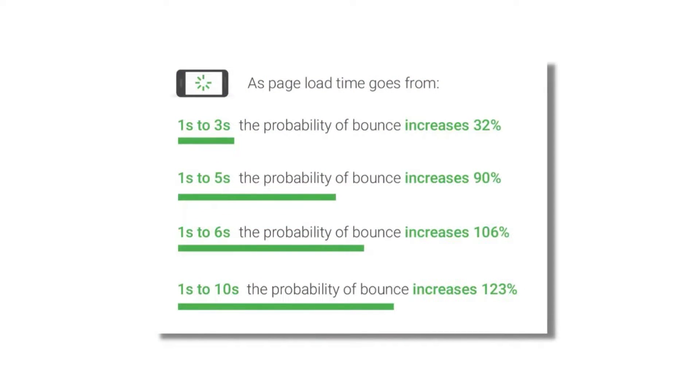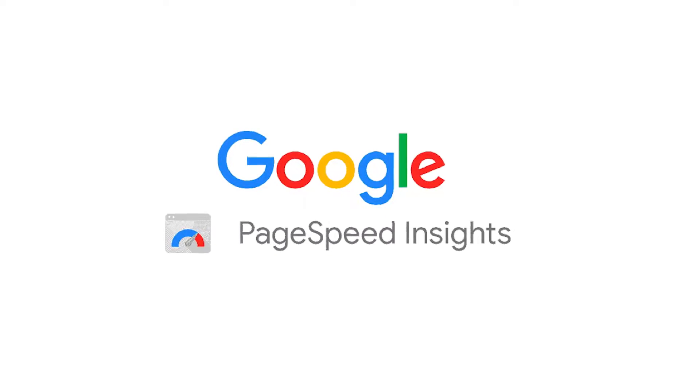By optimizing your images and making them smaller, you will reduce the size of HTTP requests, resulting in a faster loading site. A slow loading website also leads to a higher bounce rate, as shown in this screenshot shared by Google — which ultimately leads to lost revenue.